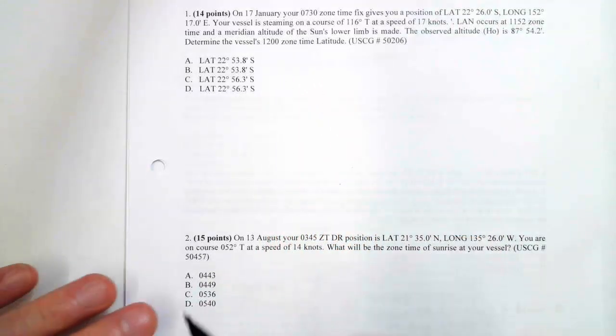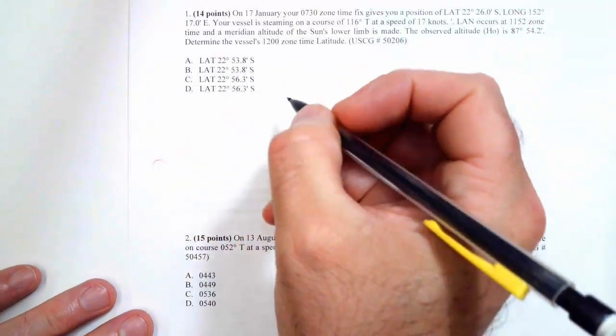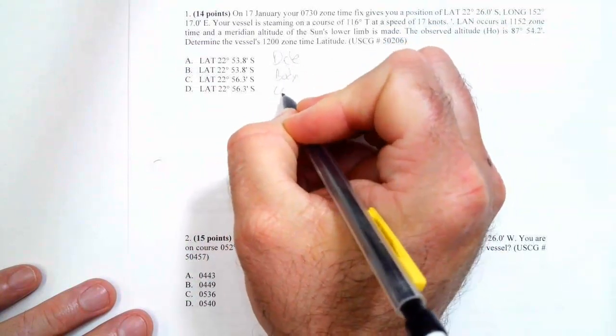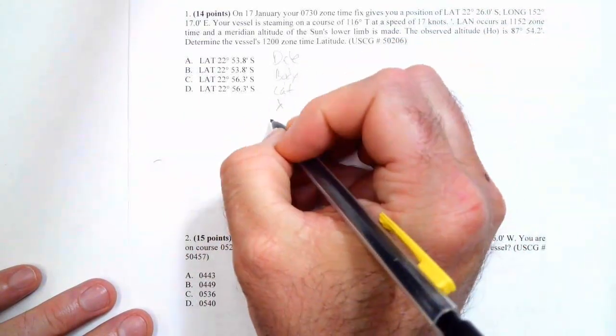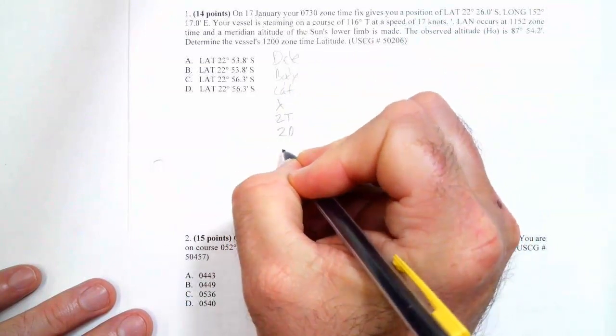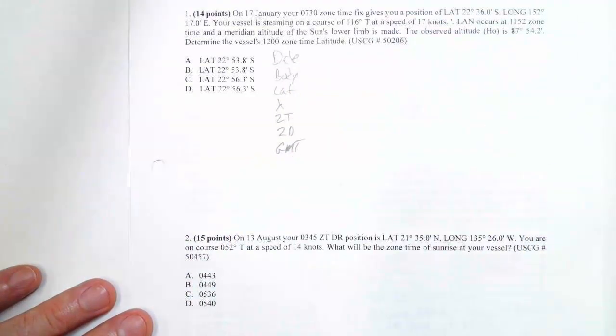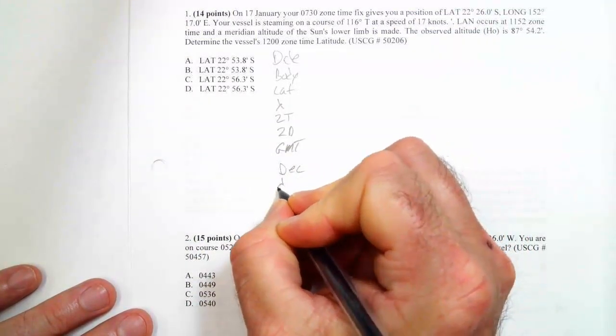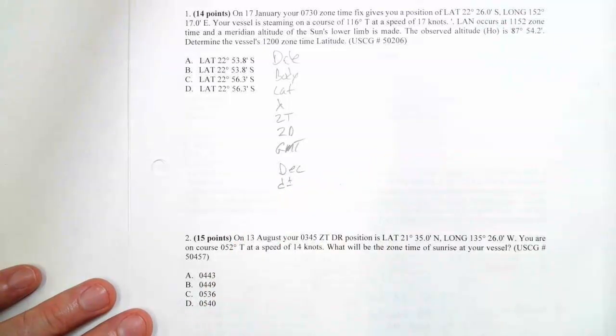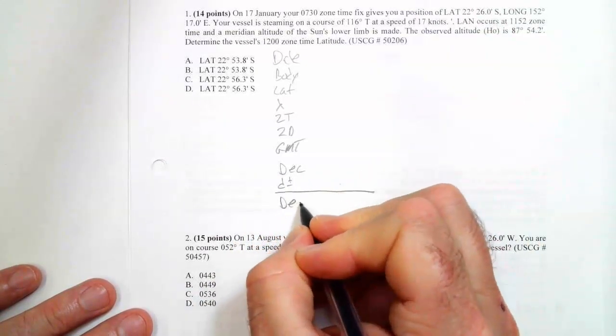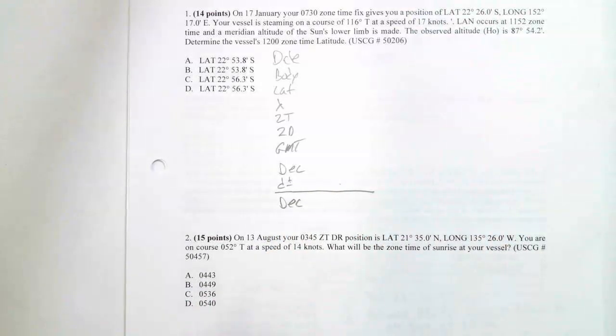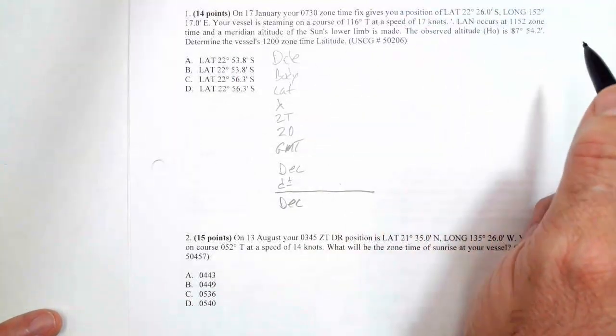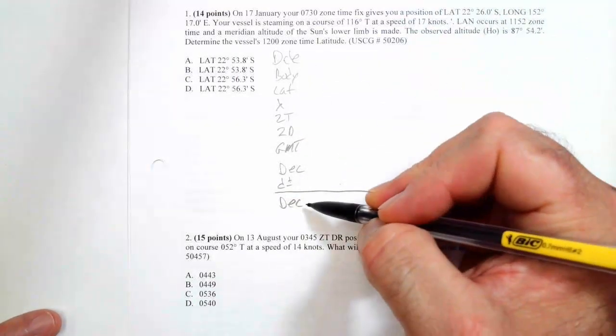We don't need to do an advance in the beginning on this problem, but we will need to do an advance at the end. So let's go. We're going to collect some information here. As usual, we want to know some basic information like what's the date, body. I'm going to collect the latitude, the longitude. I want the zone time, the zone description, and then I want GMT. Once I have GMT, then I'm going to calculate the declination. So I'm going to do my D factor, which is going to be plus or minus. And I'll get my declination.